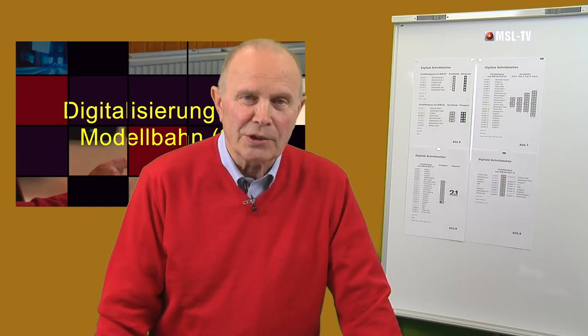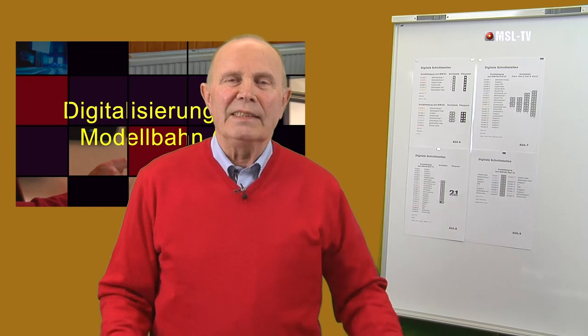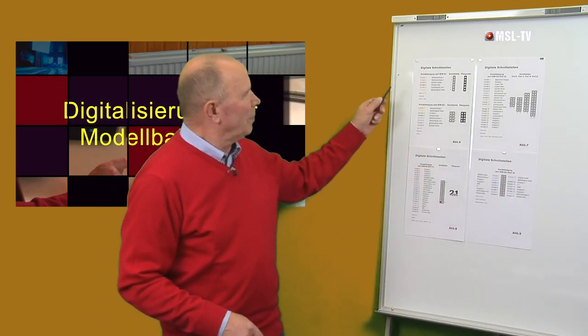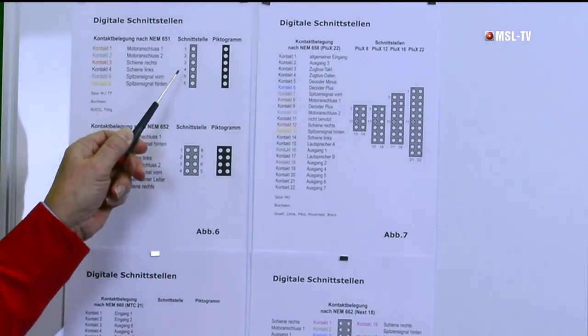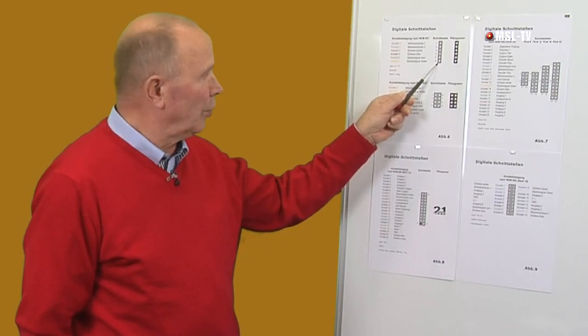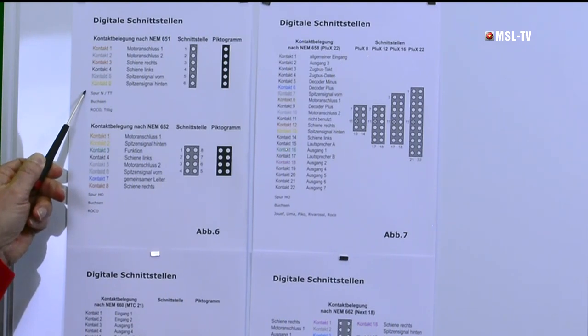Fangen wir an in der Reihenfolge mit der 6-poligen Schnittstelle nach NEM 651. Diese 6-polige Schnittstelle ist dadurch gekennzeichnet, dass wir in der Platine Buchsen haben, also Löcher. Sie wird vorwiegend eingesetzt in der Spur N und TT und verwendet hauptsächlich von den Marken Roco und Tillig. Auch bei kleinen H0-Lokomotiven, zum Beispiel die Köf, wird die 6-polige Schnittstelle gern verwendet.